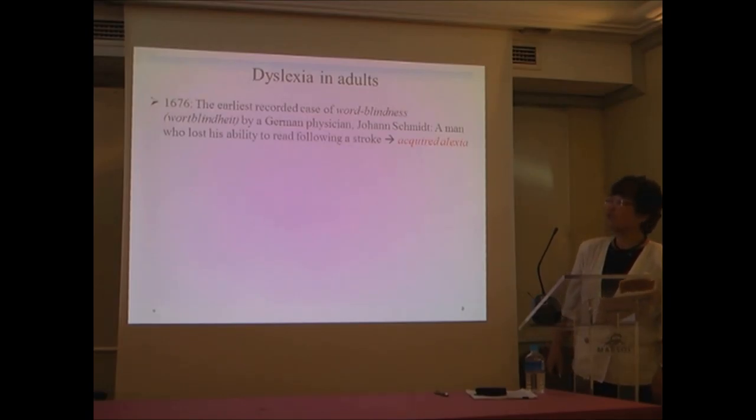The earliest recorded case of word blindness can go as far back as 1676, when German physician Johann Schmitt observed about a man who lost his ability to read, and the loss of ability to read followed his stroke. This is an acquired alexia.